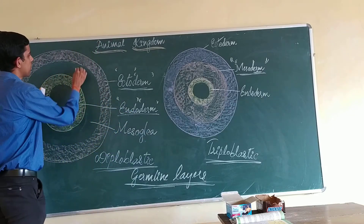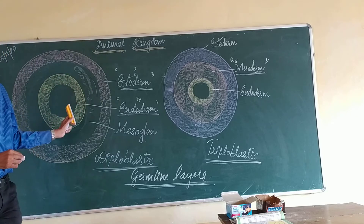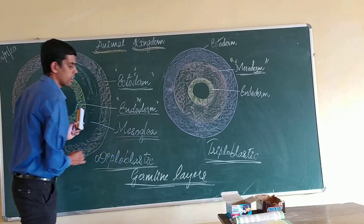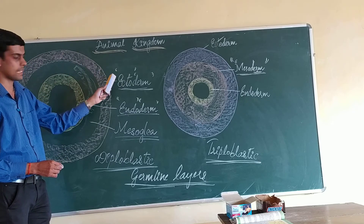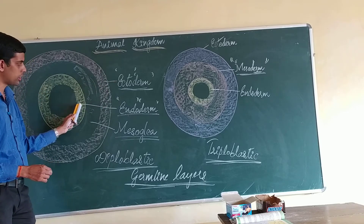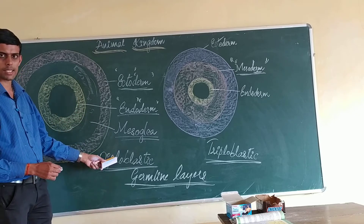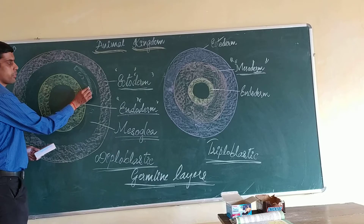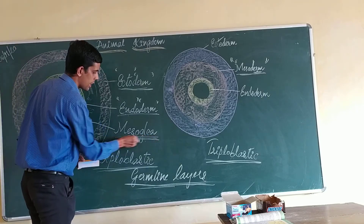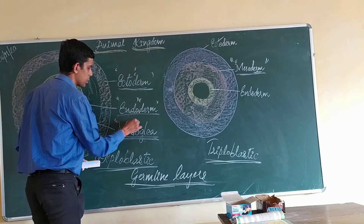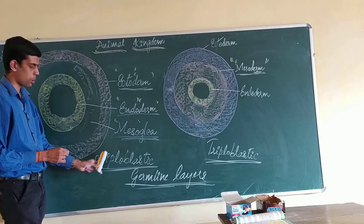In diploblastic animals we find a middle undifferentiated layer called mesoglea. The ectoderm is the outermost layer of differentiated cells, and the endoderm is the innermost layer. In diploblastic animals we don't find any differentiated cells in the middle layer, hence it is called mesoglea — 'meso' refers to middle and 'glea' refers to the undifferentiated layer.